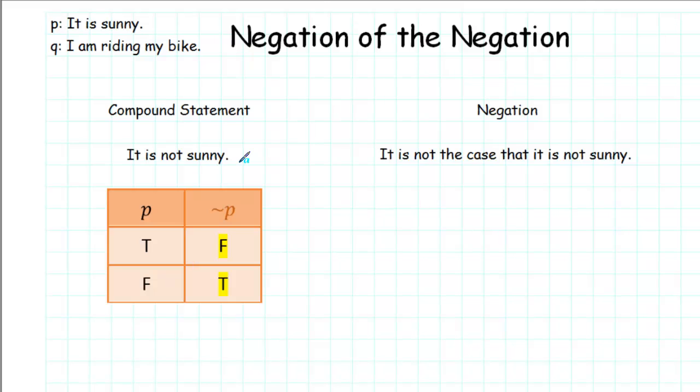Well, what is the negation of the negation? One way to write it would be: it is not the case that it is not sunny. I think you can probably see an easier way. The negation of it is not sunny would be, it is sunny.